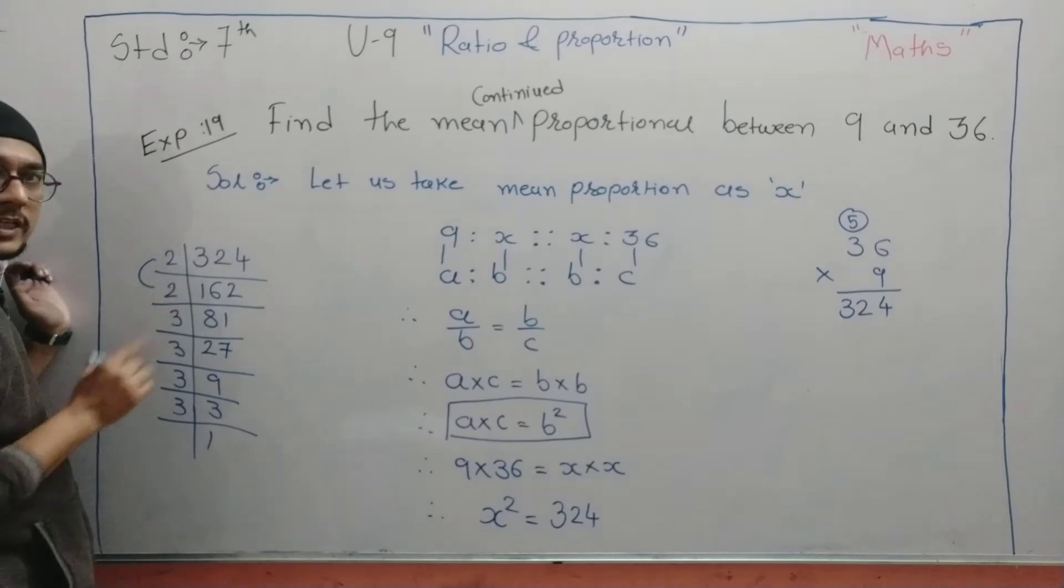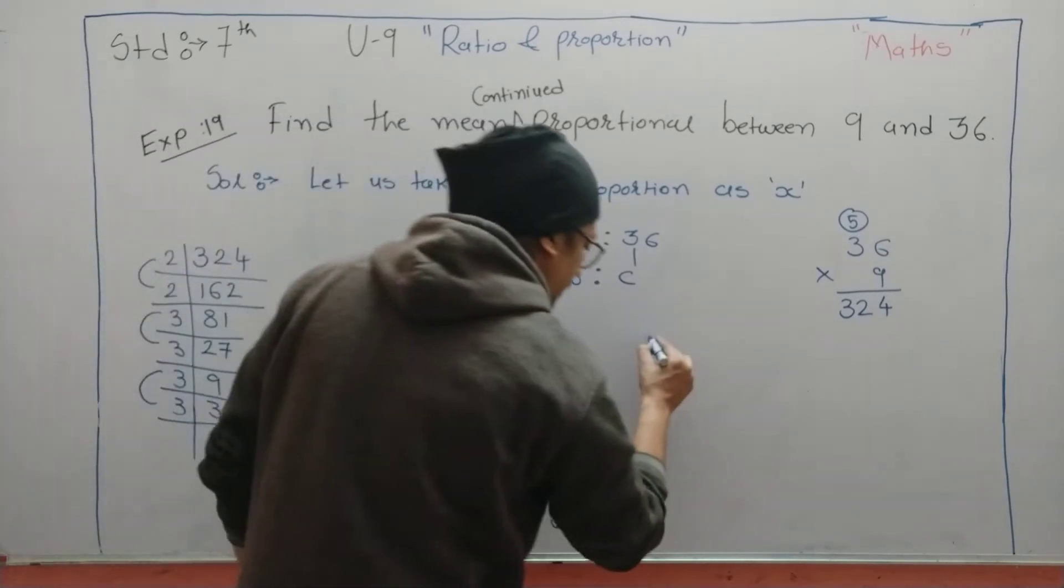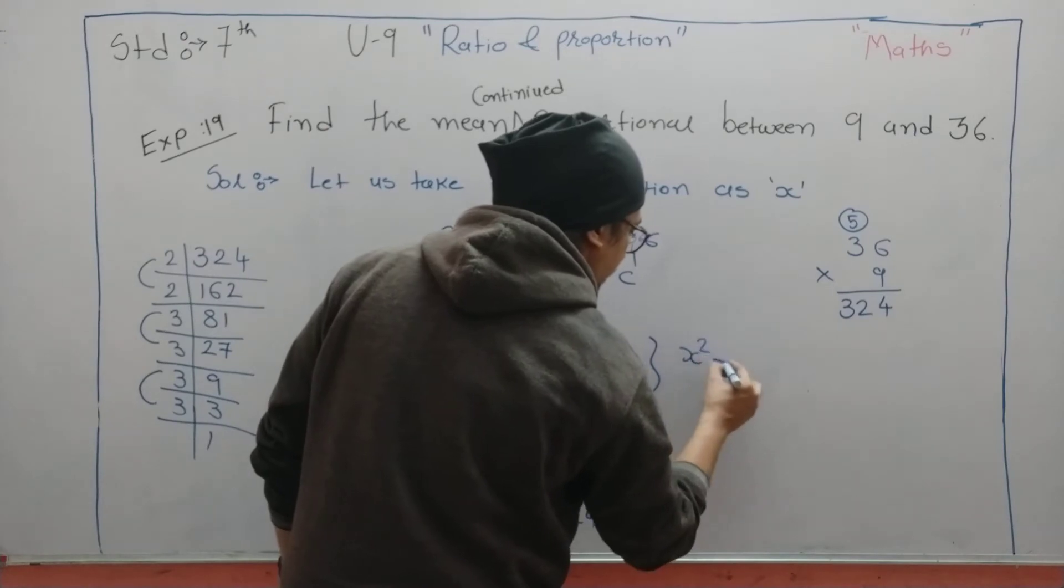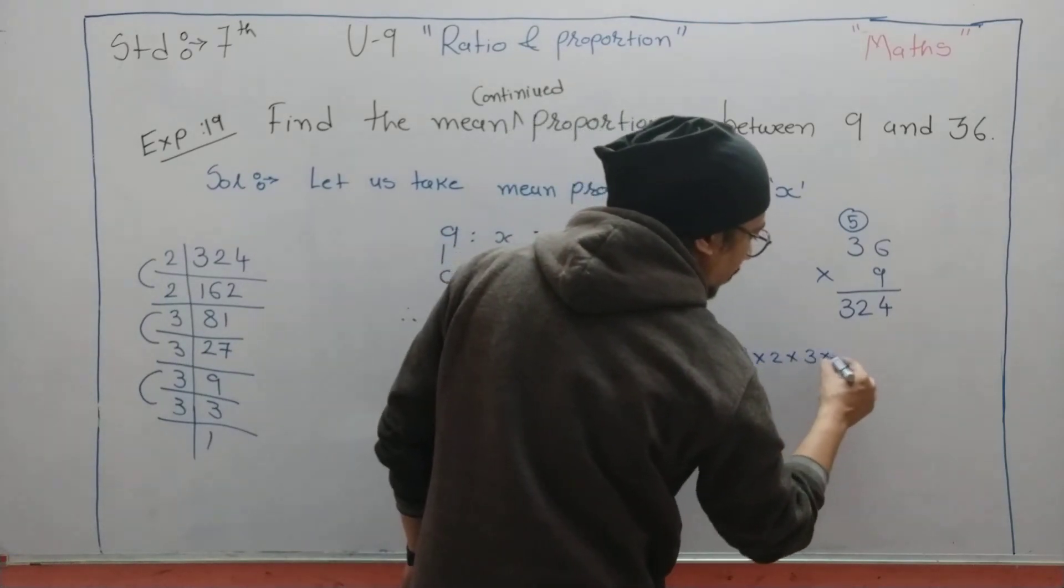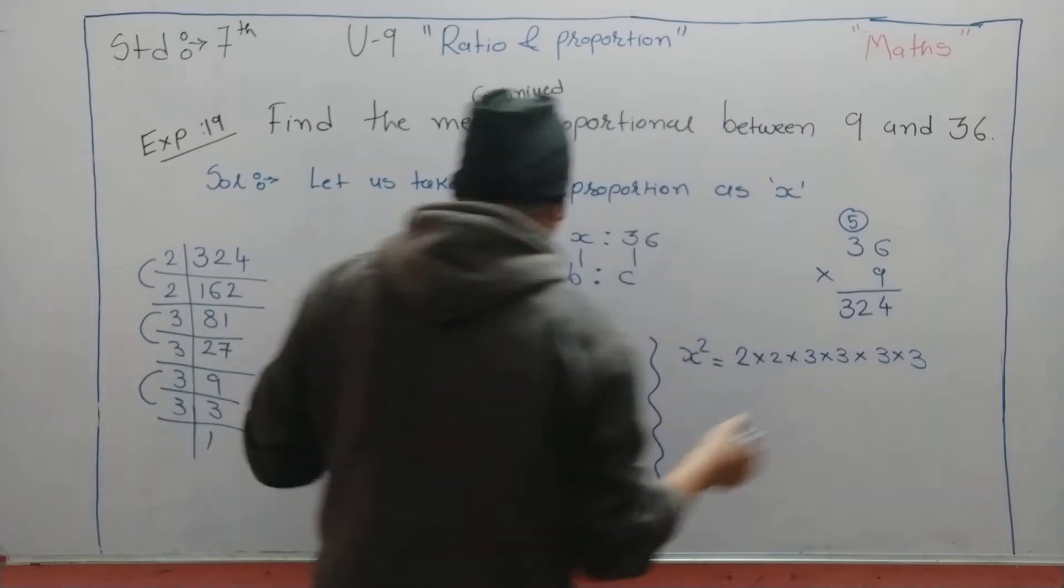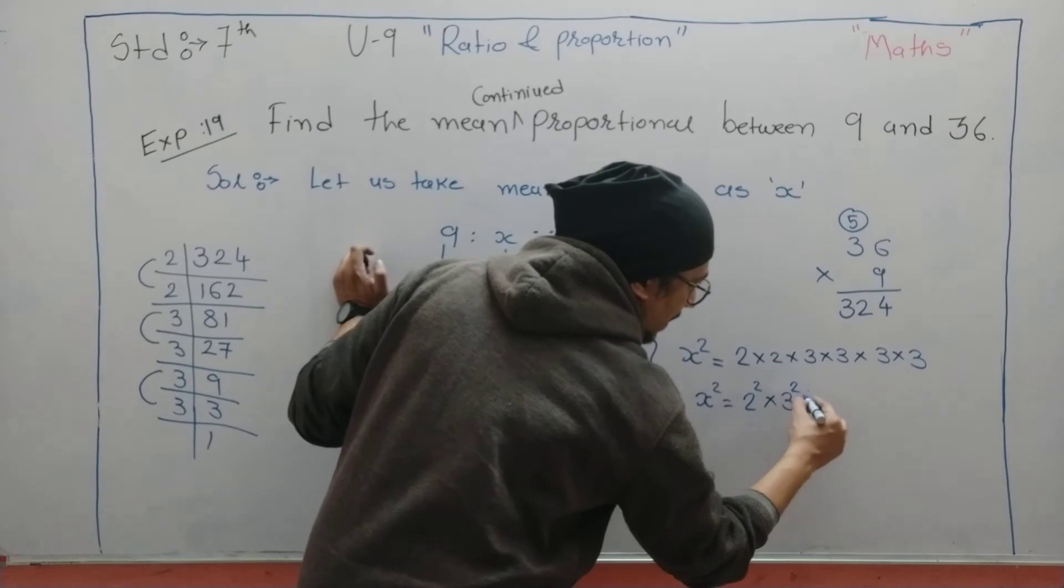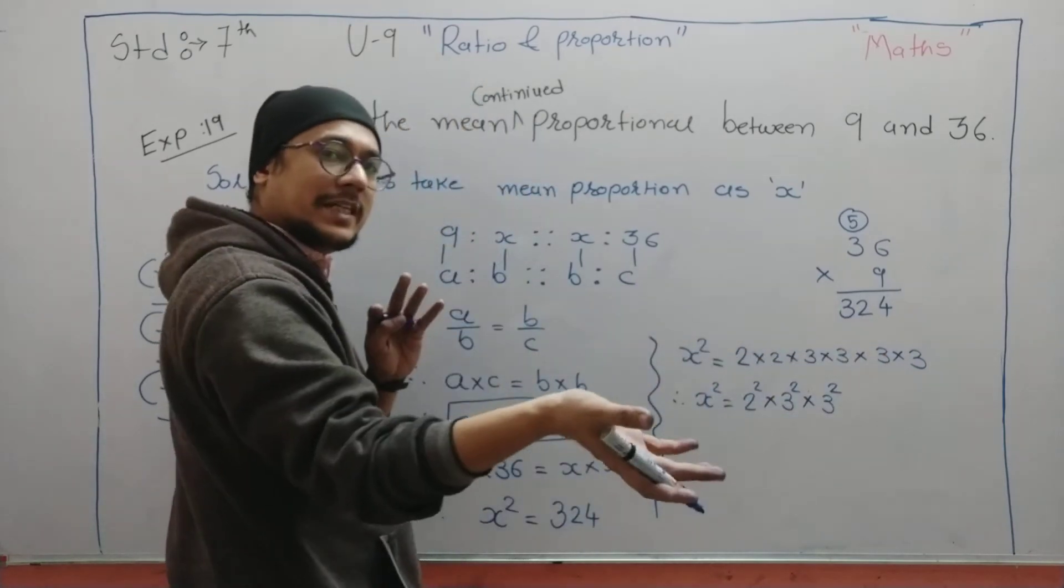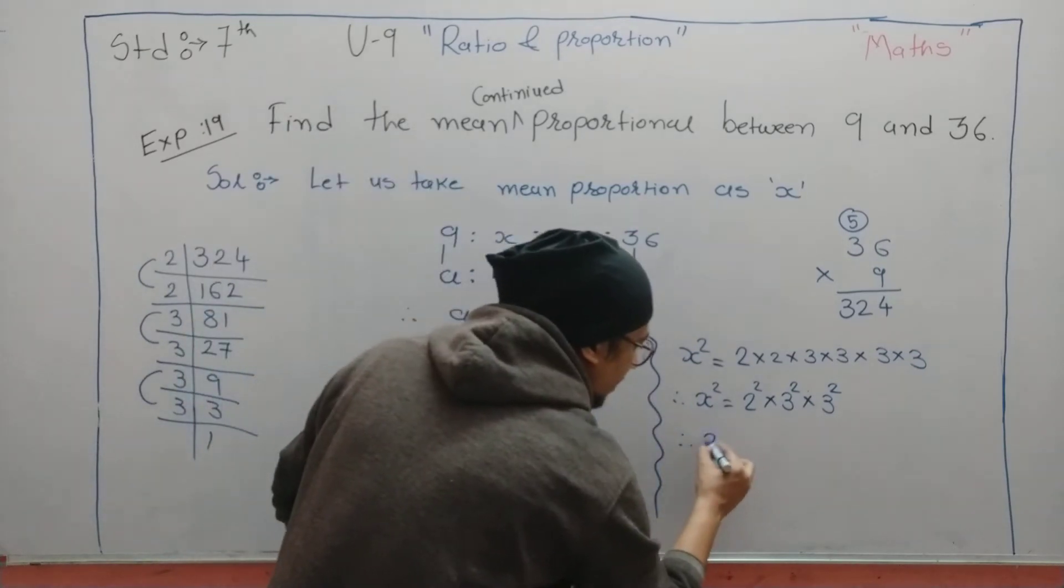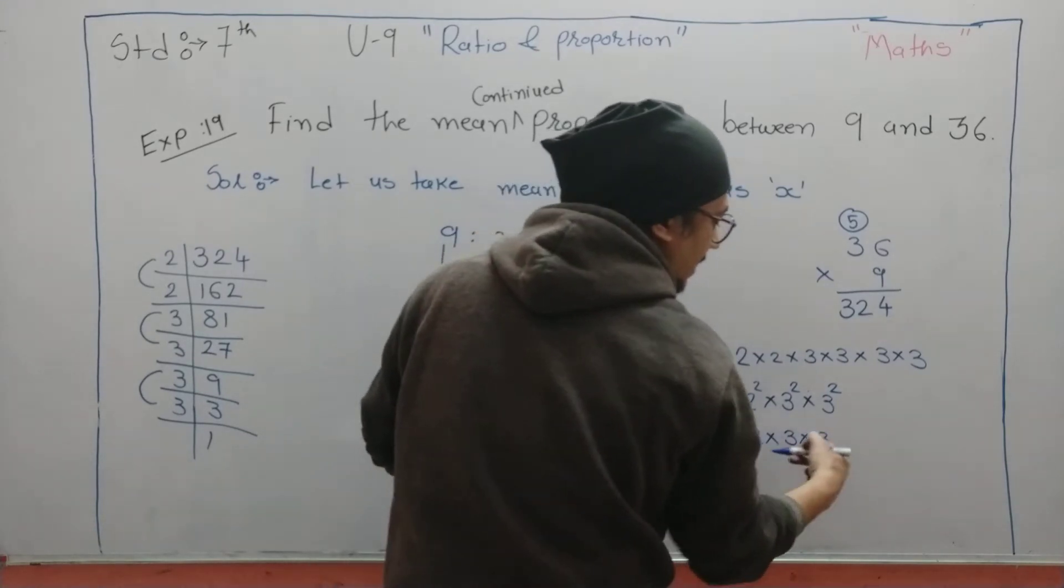Since they have asked for the square, we have to make a pair. So here 2 and 2, how many pairs? One. 3 and 3, also one pair. 3 and 3, also one pair. So what we can do, we can write x square as 2 times 2, 3 times 3, 3 times 3. We can write it as 2 into 2, 3 into 3, 3 into 3. Then we have asked for square. X square equals 2 square into 3 square into 3 square. Here also square, and here also. So we will cancel square from both the sides. So x will be 2 into 3 into 3. So x is equal to 2 times 3 are 6, 6 times 3 are 18.